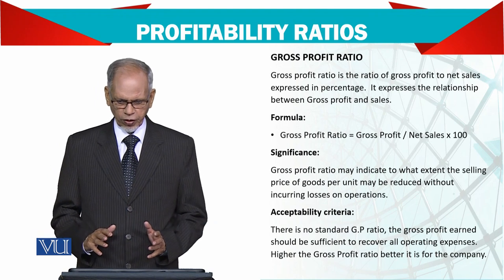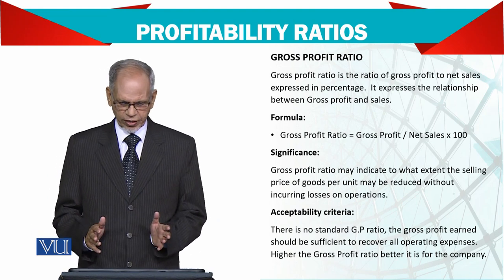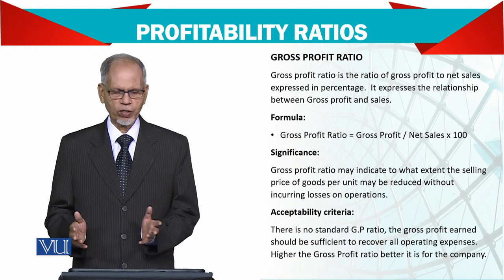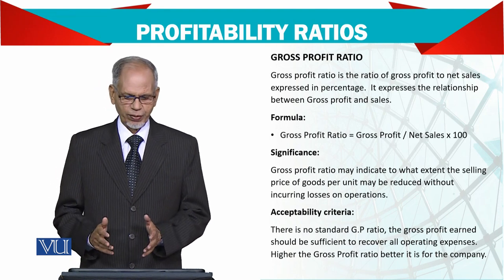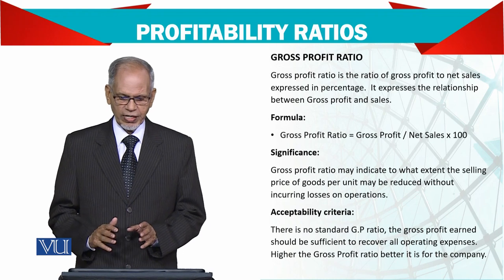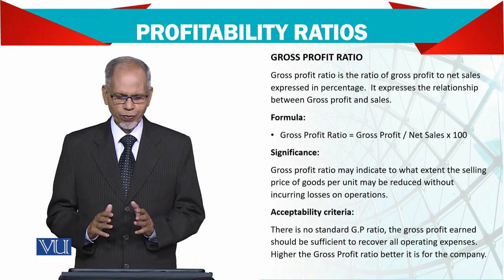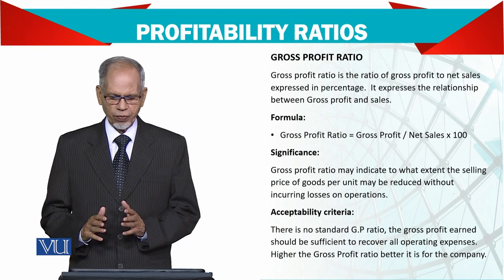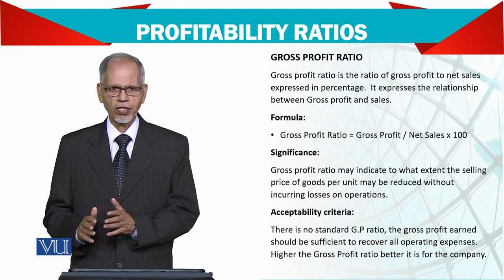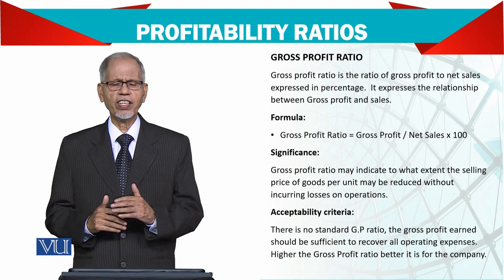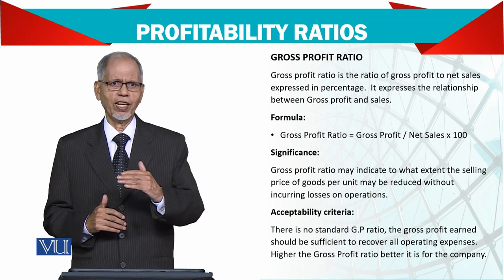The simple formula is gross profit divided by net sales multiplied by 100, giving you a percentage. The significance is that the gross profit ratio may indicate to what extent the selling price of goods per unit may be reduced without incurring losses in operations. Definitely your sale price should be greater than the cost of sales.